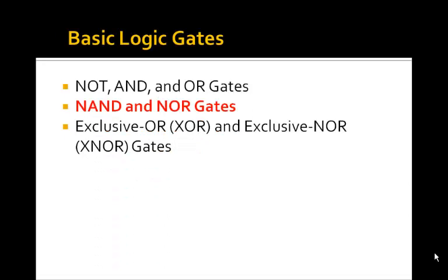Those are the three basic gates: NOT, AND, and OR. It turns out that any logic circuit can be made from only those three basic gates. Let's look at two other gates that can be made from NOTs, ANDs, and ORs — that is, NAND and NOR gates.